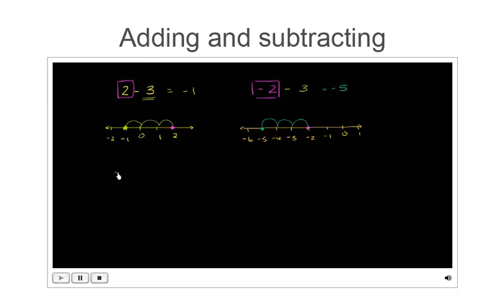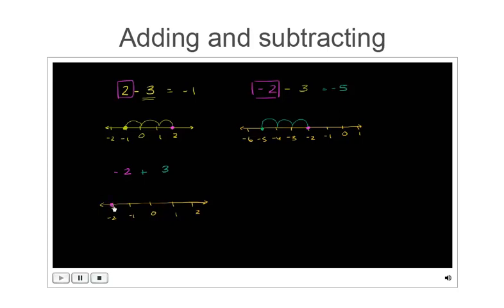Now let's try negative 2 plus 3. Draw the number line with negative 2, negative 1, 0, 1, and 2. We're starting at negative 2 — 2 to the left of 0 — and we're going to add 3, so we go 3 to the right: 1, 2, 3 — and we end up at positive 1.